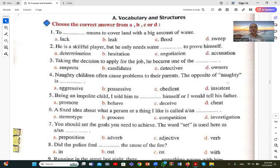Number three: Taking the decision to apply for the job, he became one of the candidates. Candidates, مرشح لوظيفة ما, one of the candidates is the correct answer. Number four: Naughty children often cause problems to their parents. The opposite of naughty is obedient. Naughty means mischievous children who don't listen. Obedient means they listen and follow instructions.